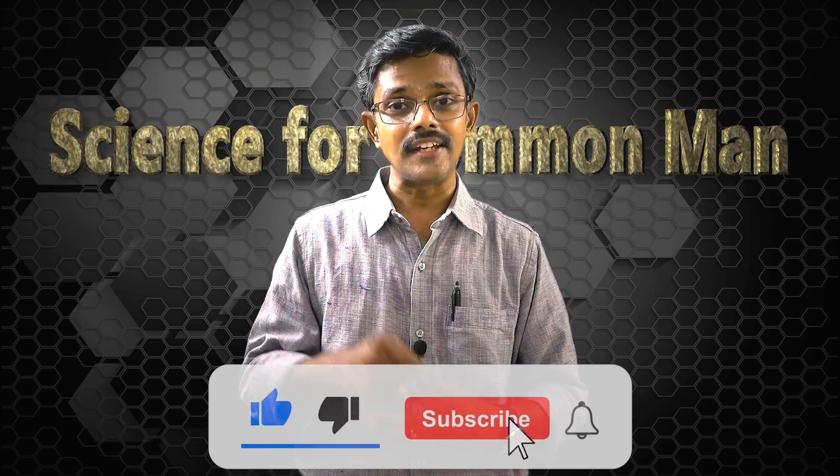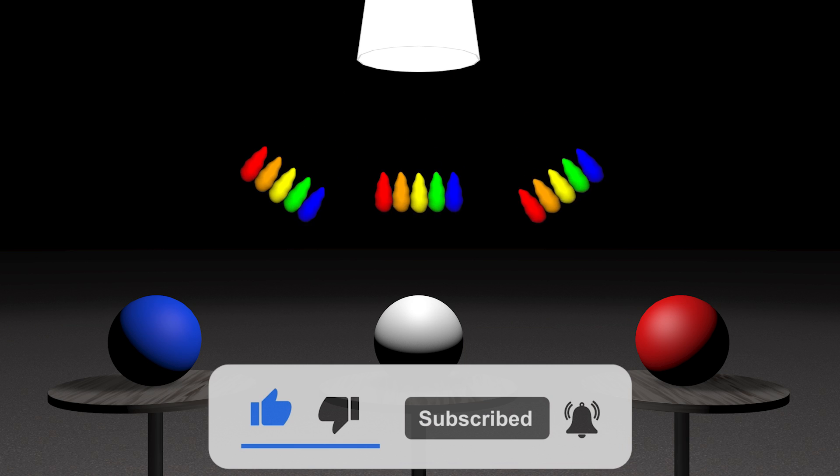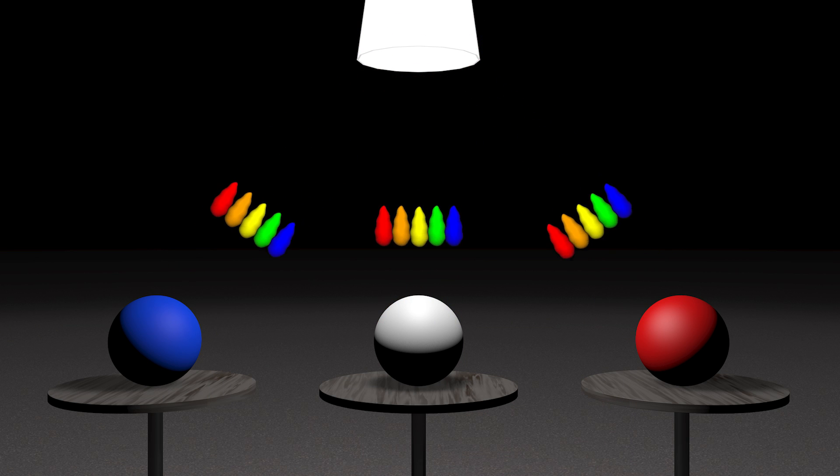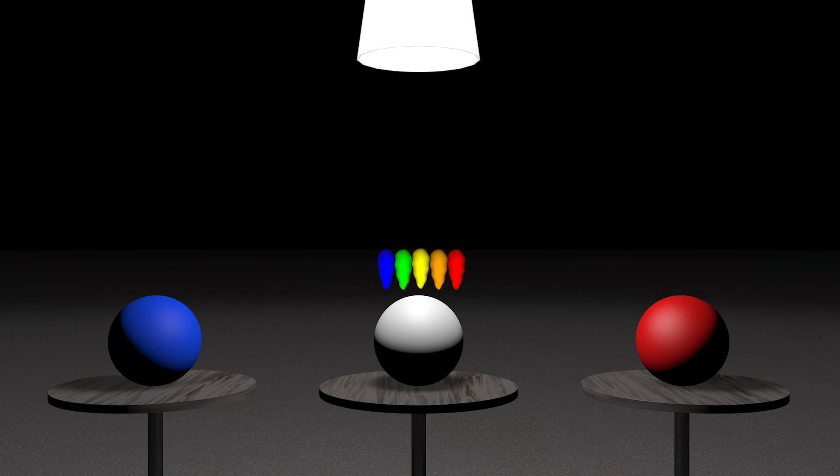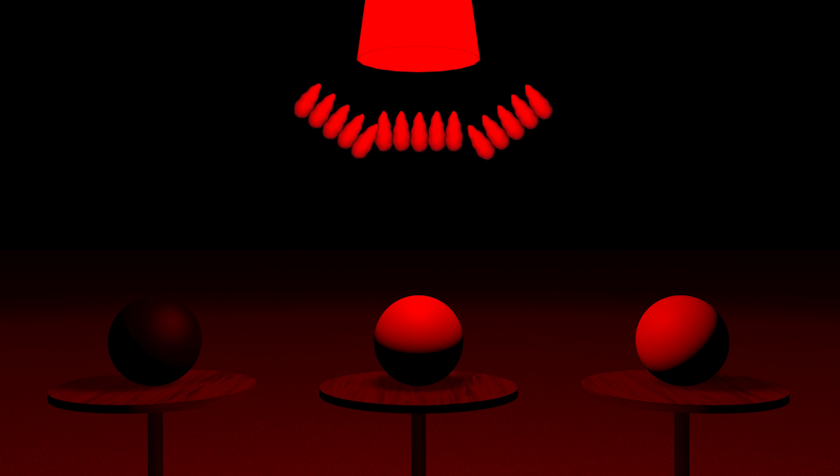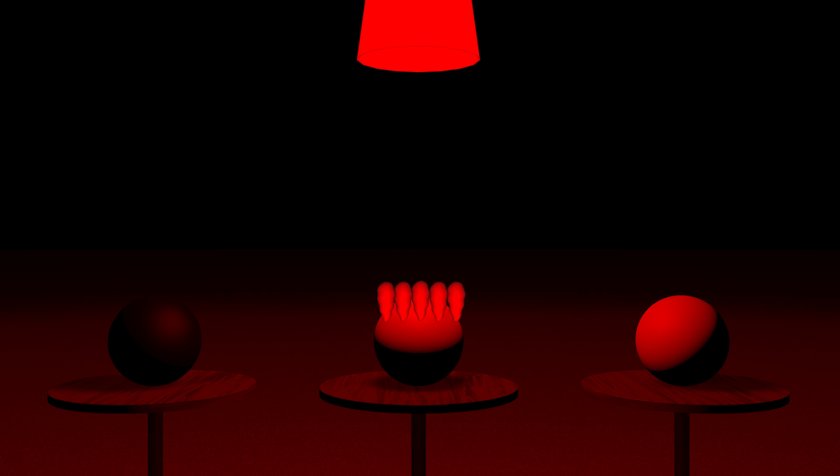Now, let's go to the magic room again. Under white light, all balls receive all photons. White ball reflects everything. Red is tuned to reflect only red and blue is tuned to reflect only blue. And in red light, we have only red photons. White ball will reflect everything that comes in. So, it would reflect this red also.